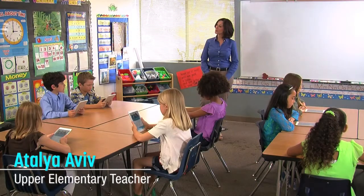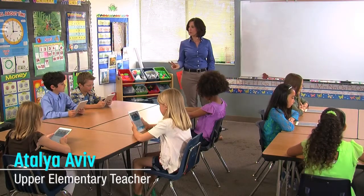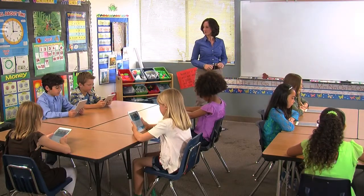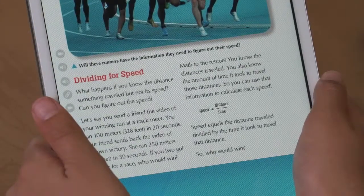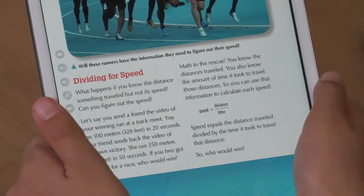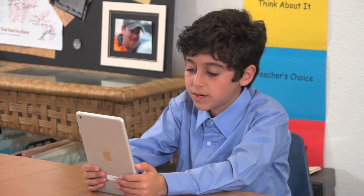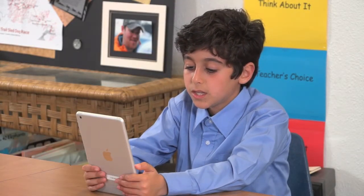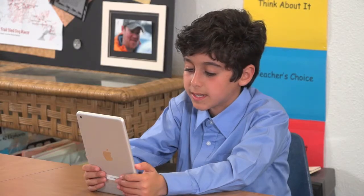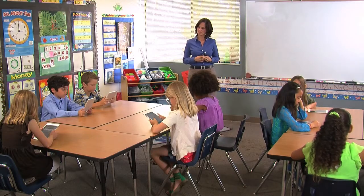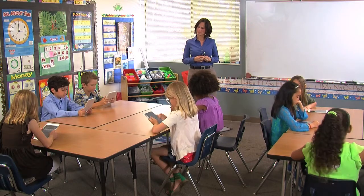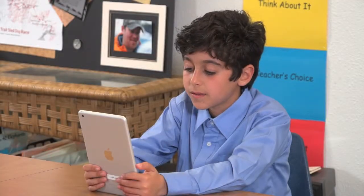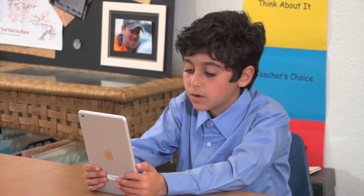Kean, would you go to page 14 and read aloud the first two paragraphs? Writing for Speed. What happens if you know the distance something traveled, but not the speed? Can you figure out the speed? Let's say you send a friend the video of your winning run at a track meet. You ran 100 meters in 20 seconds. Your friend sends back the video of her own victory. She ran 250 meters in 50 seconds. If you two got together for a race, who would win?